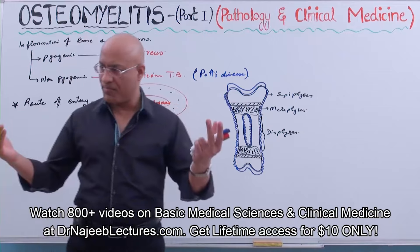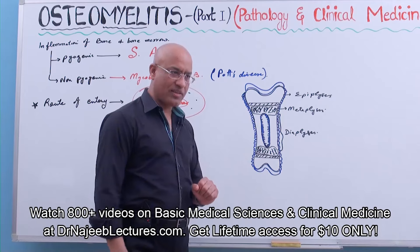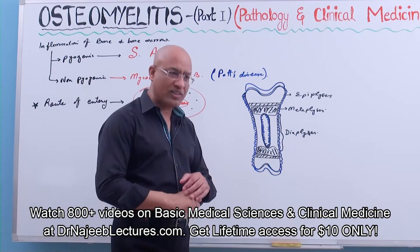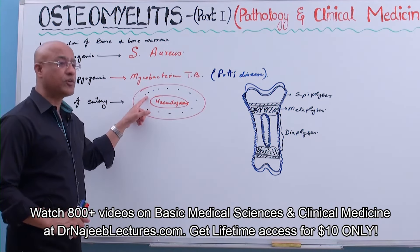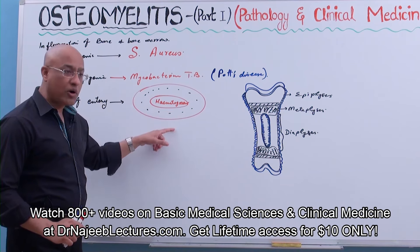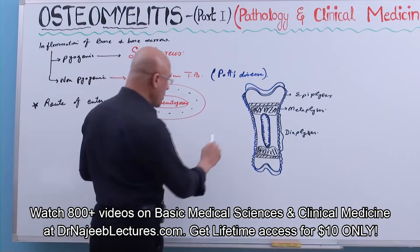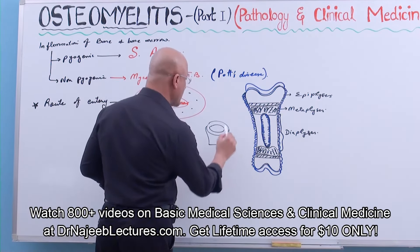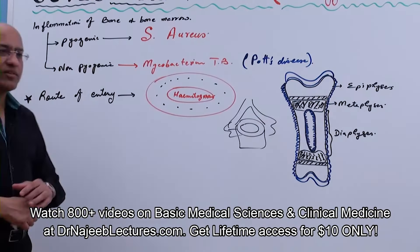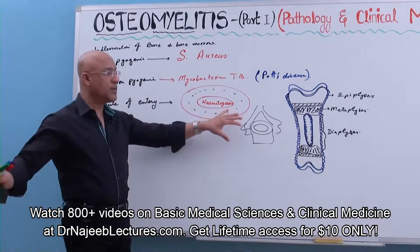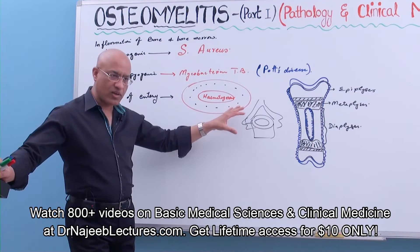In adults, when epiphyseal growth plates disappear there is no more metaphysis and it is no longer as vascular. However, in adults bacteria can still reach bone hematogenously from a distant site of infection. In adults, the most commonly involved site via hematogenous spread is the vertebra.